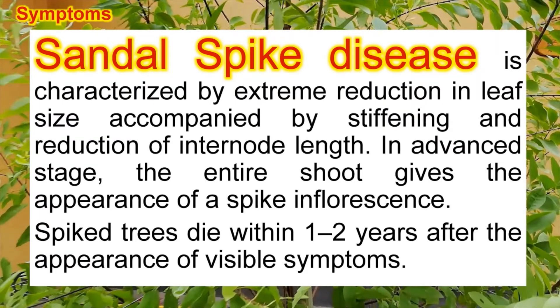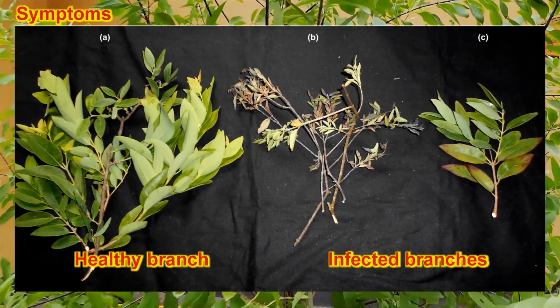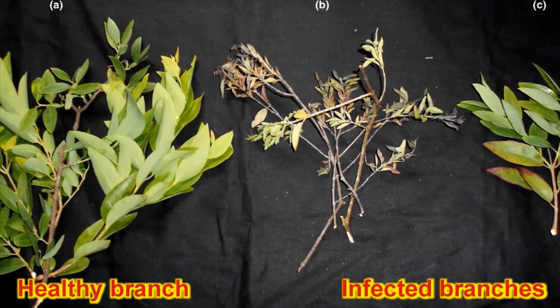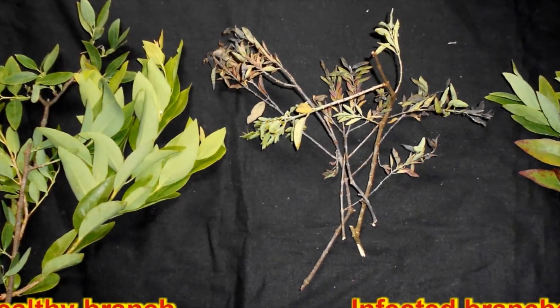The symptoms of this disease are characterized by extreme reduction in leaf size, accompanied by stiffening and reduction of internodal length. In advanced stages, the entire shoot gives the appearance of a spike or inflorescence. Within one or two years, the infected plant dies. You can see in the picture the healthy branch on the left and the infected branch on the right, where the branches are highly compressed, the leaves are highly reduced, and the internodal lengths are reduced — making it look like a spike. That is why the disease is called sandal spike disease.